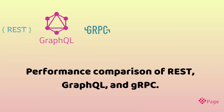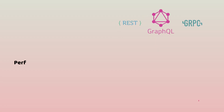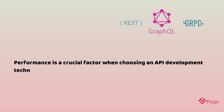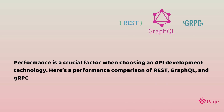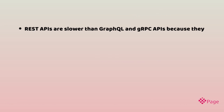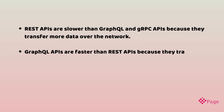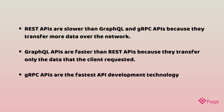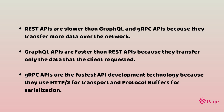Performance comparison of REST, GraphQL, and gRPC. Performance is a crucial factor when choosing an API development technology. REST APIs are slower than GraphQL and gRPC APIs because they transfer more data over the network. GraphQL APIs are faster than REST APIs because they transfer only the data that the client requested. gRPC APIs are the fastest API development technology because they use HTTP/2 for transport and protocol buffers for serialization.